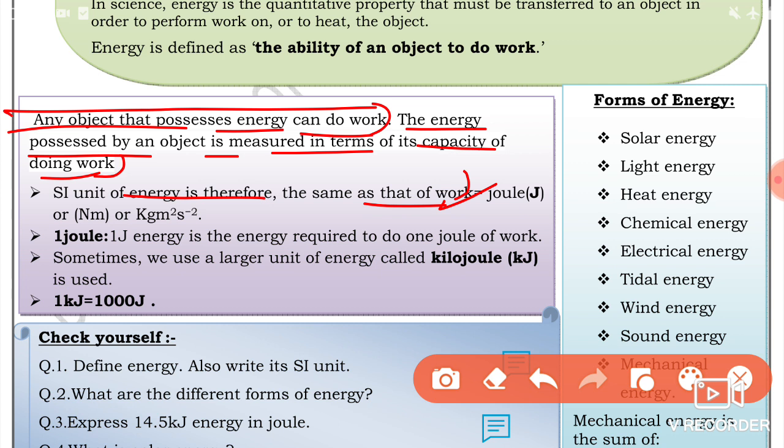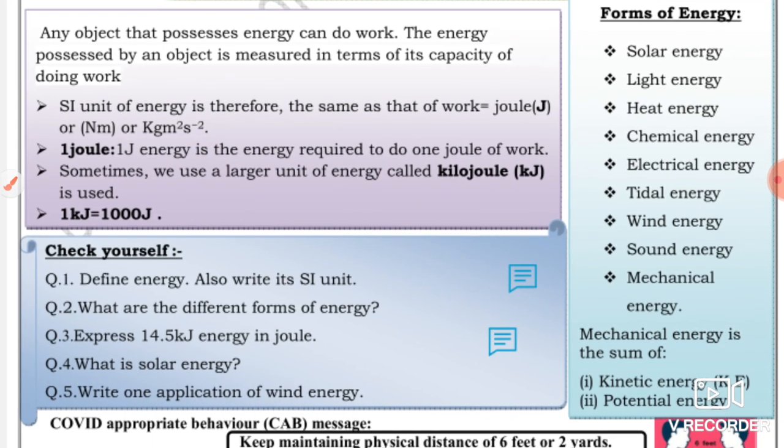One joule is the energy required to do one joule of work. Sometimes we use a larger unit of energy called kilojoule (kJ). One kilojoule equals 1000 joules.